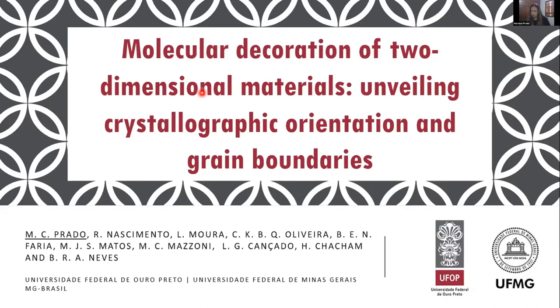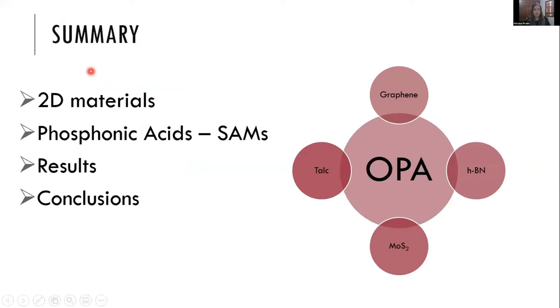This is the summary of this presentation. I'll first talk about 2D materials and phosphonic acid self-assembled layers, then show our results for four systems: OPA plus graphene, hexagonal boron nitride, MoS2 molybdenum disulfide, and talc, and finally our conclusions.